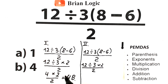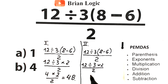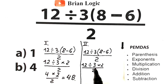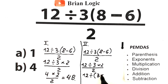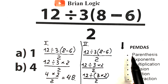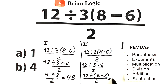But some people have a different interpretation. While it's not the correct answer today, it would have been regarded as correct 100 years ago. Historically, the division symbol was used to mean you should divide by the entire product on the right. So we divide 12 by the entire product: 3 times (8 minus 6) divided by 2. That gives us 3 times 2 equals 6, then 12 divided by 6 equals 2, and 2 divided by 2 equals 1. This is option A.